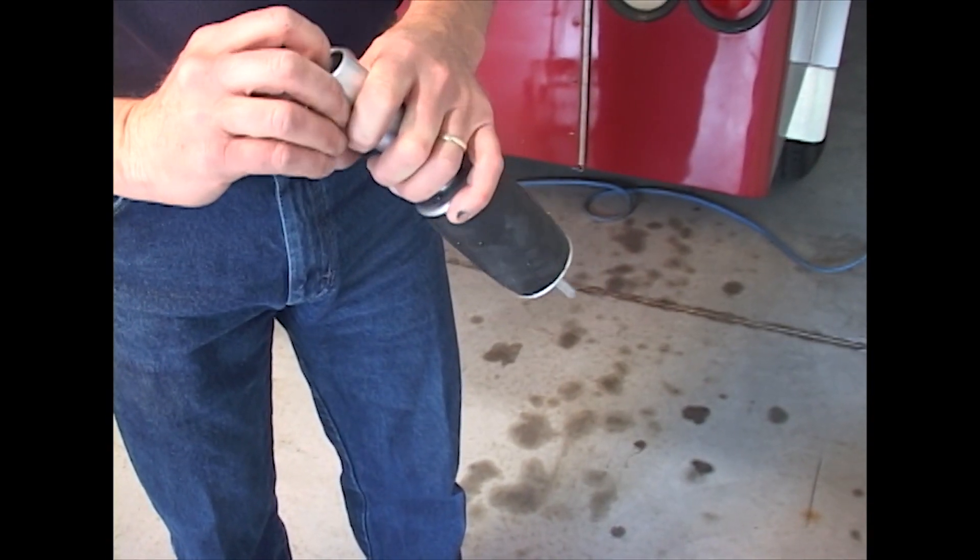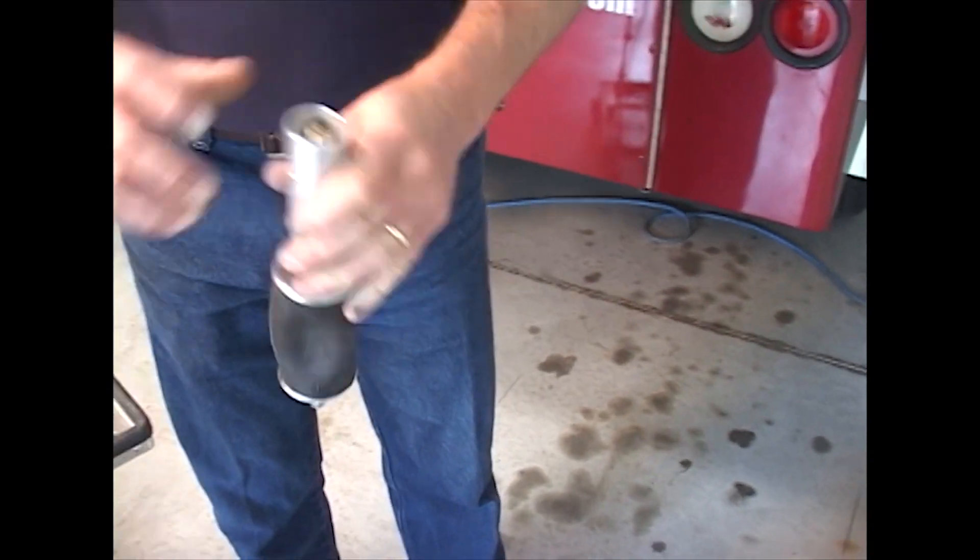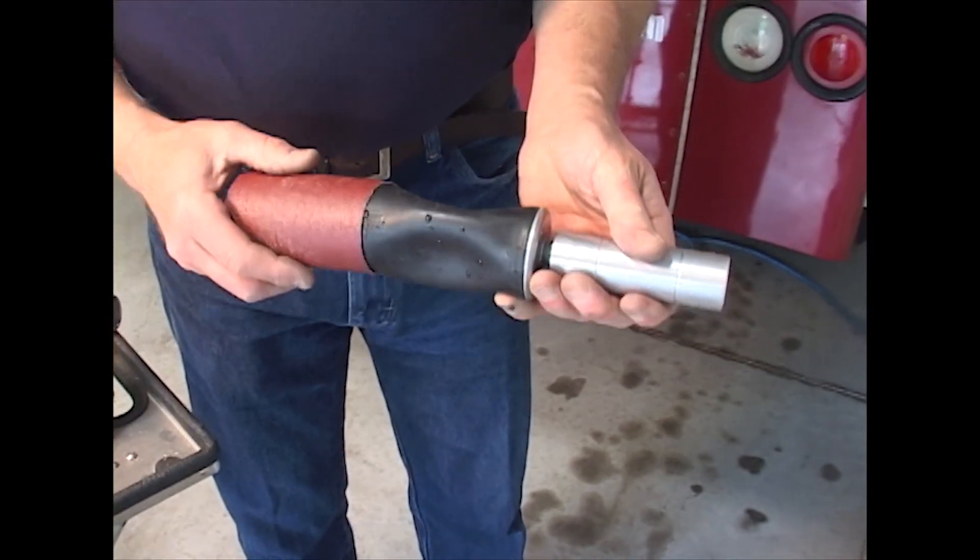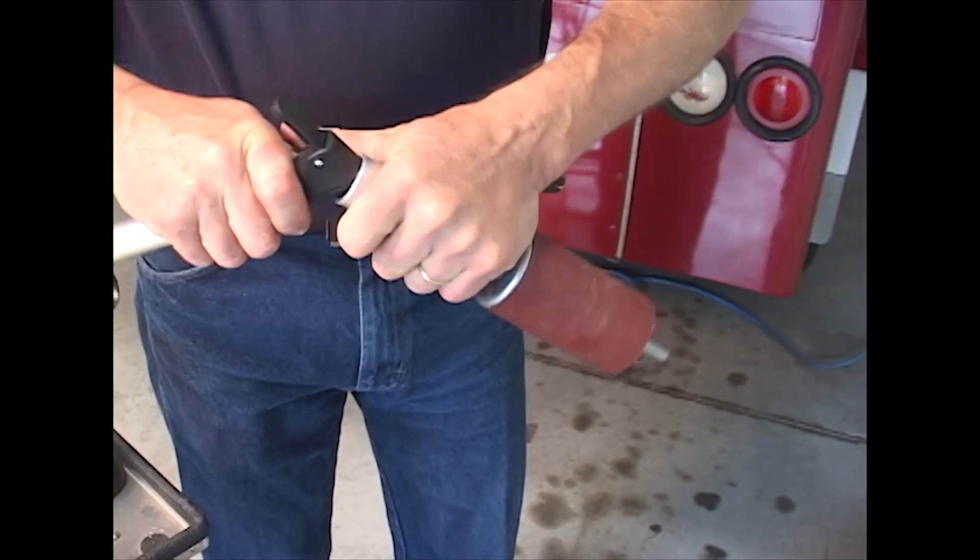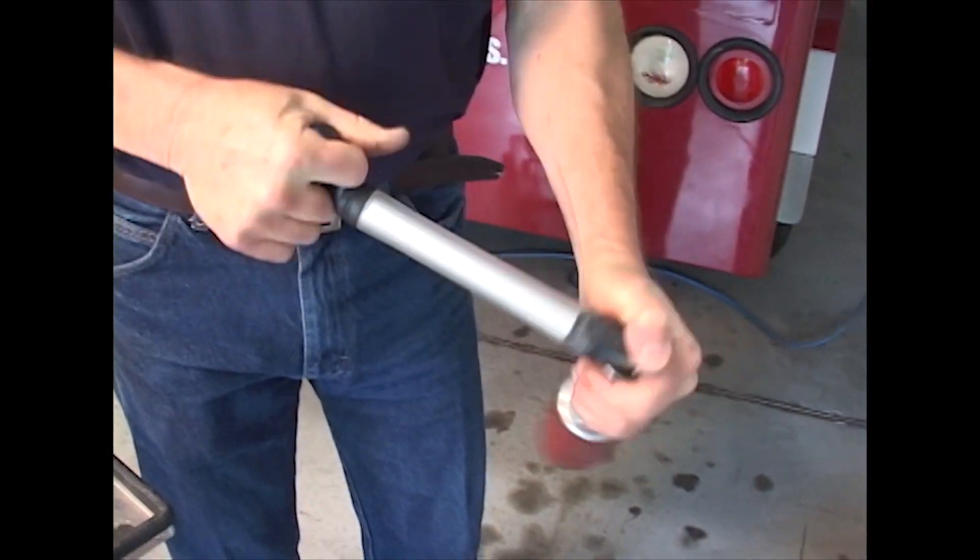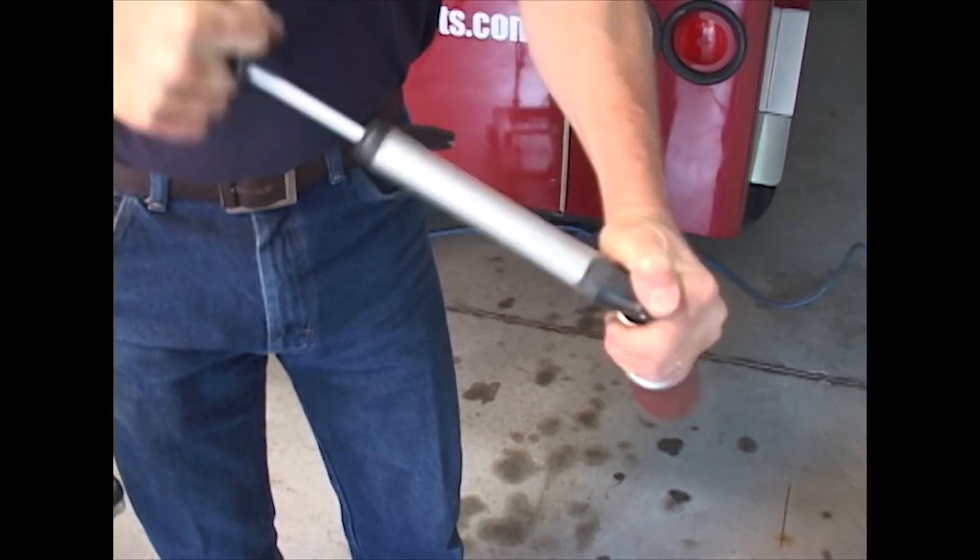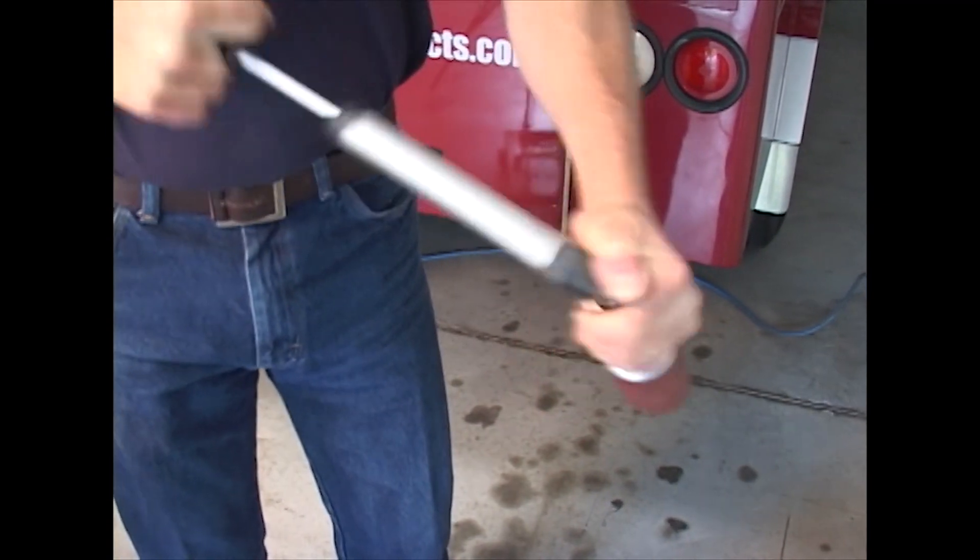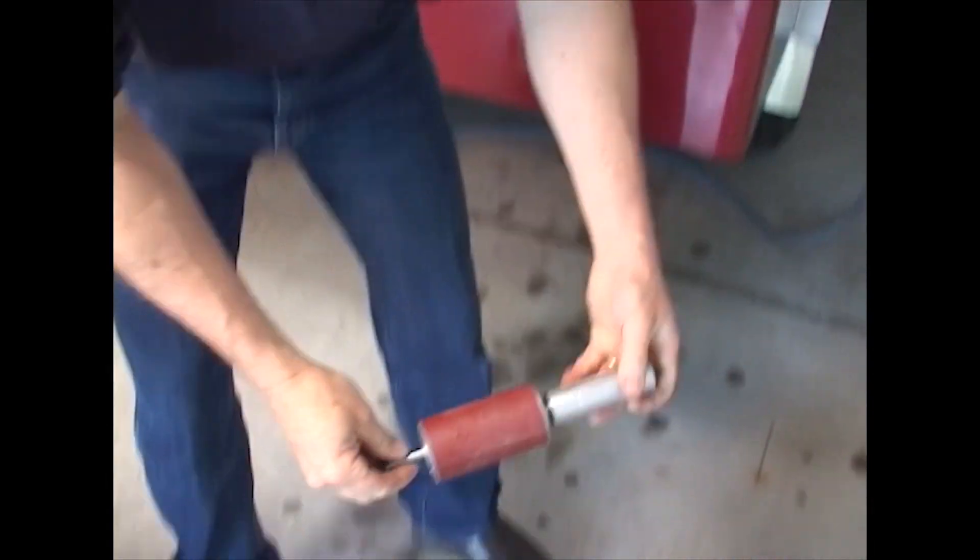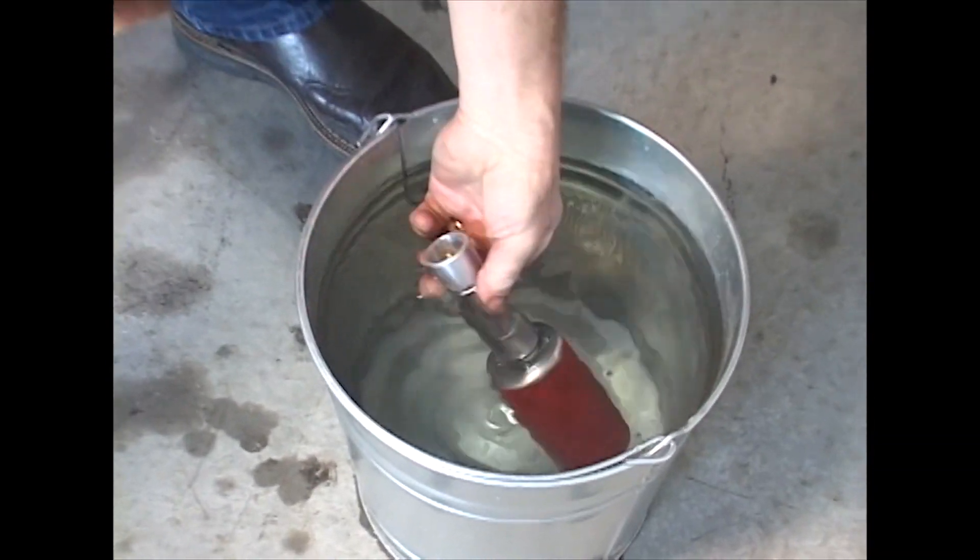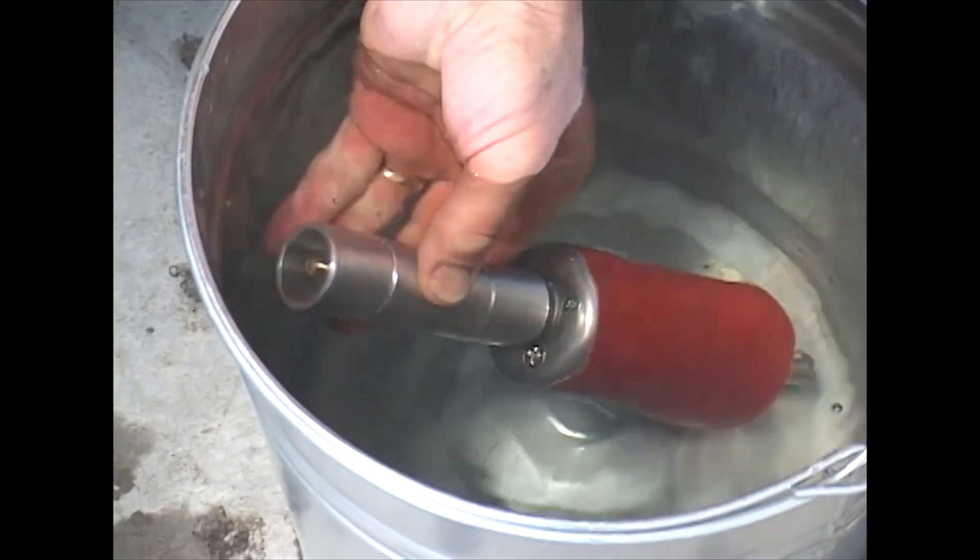If the bladder is sound and you don't see any leaks, deflate the unit again, put the sleeve over it, and now you want to pressurize it again. Then you put it in the bucket and observe if there are any leaks.